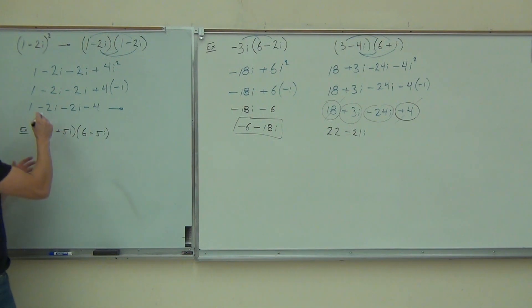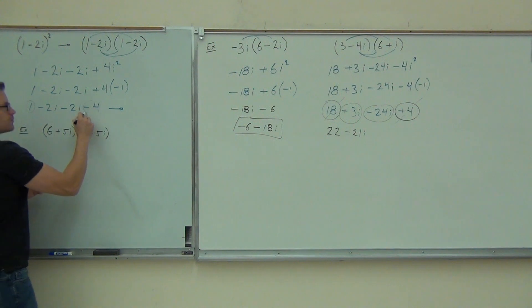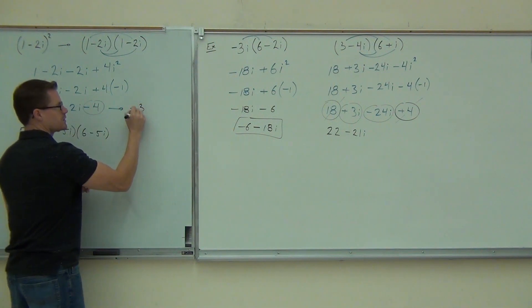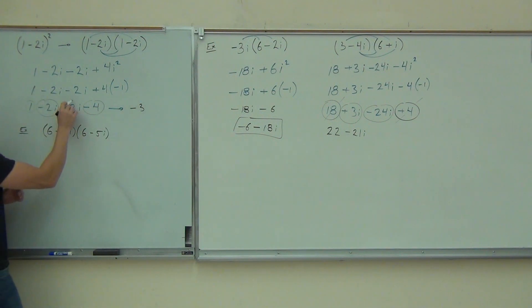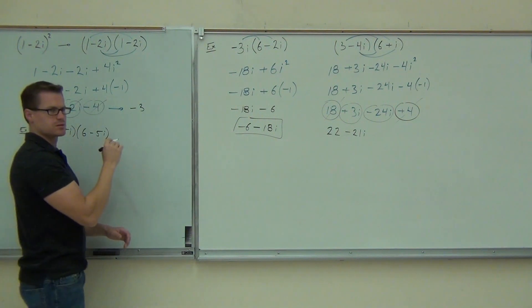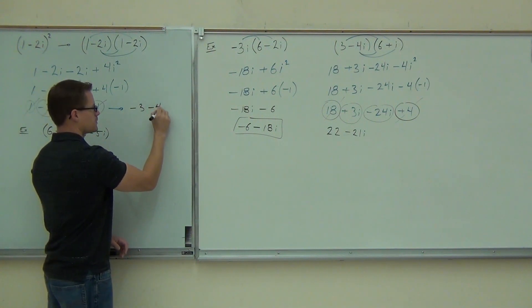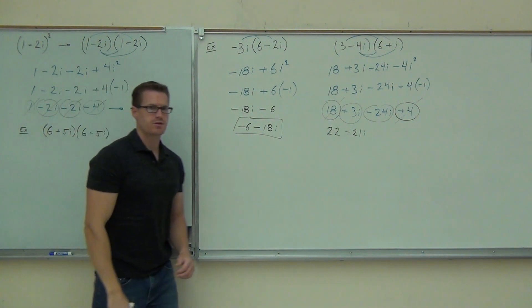Lastly, if we put our like parts together, we've got 1 minus 4, that's making negative 3. We've got minus 2i and minus 2i. How much does that give us? Negative 4i. Are you done? Negative 3 minus 4i.